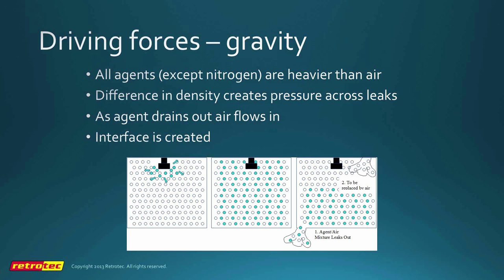What happens when nitrogen is first discharged: because of cooling, the nitrogen actually becomes heavier than the surrounding air, making it fall out the bottom of the enclosure. It then goes through a neutral stage, then starts to ascend at the end. Overall, nitrogen doesn't seem to prefer going out holes at the top or bottom, so we assume it's always in a continuous mixing state where gravity is not the driving force. For every other agent, gravity creates a density difference across the leaks: as agent flows out, air flows in, and an interface forms between air and agent.